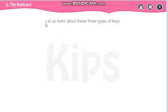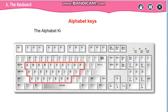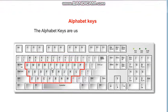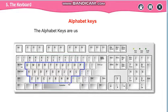Now we are going to learn about the three types of keys. The first type is alphabet keys, which we have already learned. All the alphabet keys A to Z are present, but they are not in the order of A to Z — they are in the order of Q to M. So these are your alphabet keys.